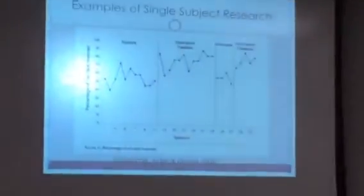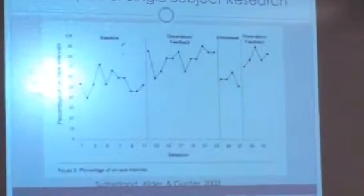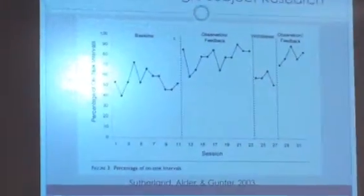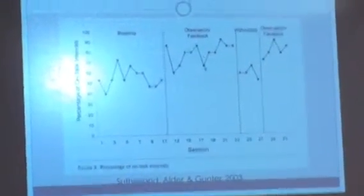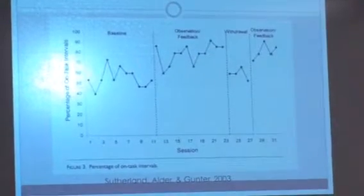It's actually called an A, B, A, B withdrawal. All baseline phases here on the graph are titled A, and then any treatment phases are titled B. So you have A, B, A, B. Does that make sense? Okay.